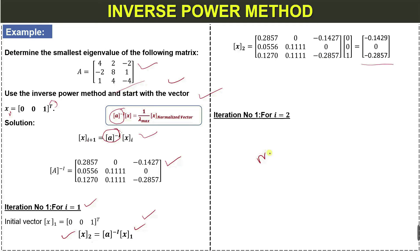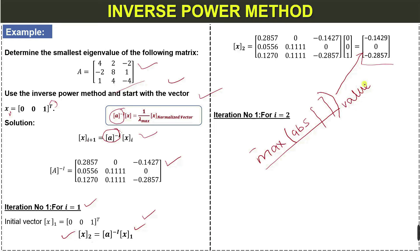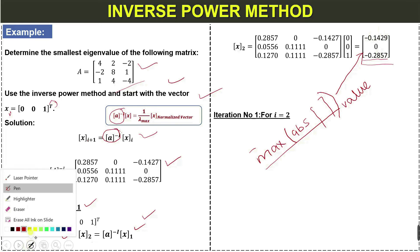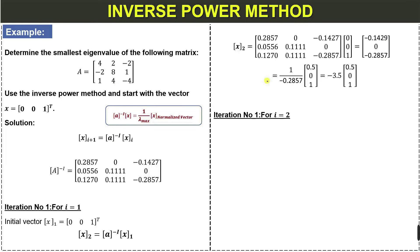After substituting all values and performing the multiplication we obtain a new vector. We take the maximum absolute value from this vector. The maximum absolute value is identified as the dominant element, and we write it as 1 divided by that maximum absolute value. We then divide the vector by this value to normalize it. Solving this gives lambda_1 = -3.5 and the corresponding normalized vector x_2 = [0.50, ..., 1].